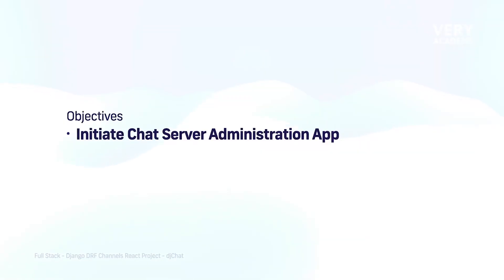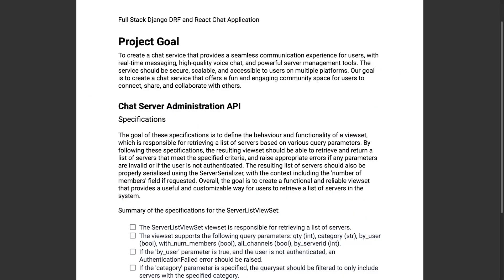Now we're going to start building the chat server administration app. This app will serve as the server and channel management system app, providing all the logic and API endpoints to retrieve lists of servers and associated channels. This whole section of the course is focused on building a single viewset which is responsible for retrieving a list of servers and associated channels based upon various query parameters.